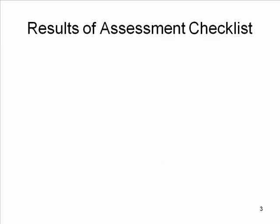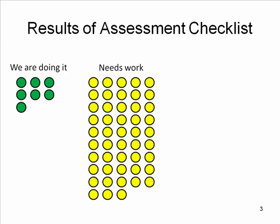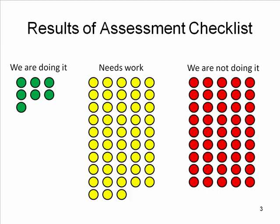So here are the results of our assessment checklist. When we take a look at the items that we are doing, there are only seven out of a hundred that we're doing well. There are 48 that we're doing but definitely need work. And there are 45 that we're not doing at all but we should be. Now, if you think about these as stoplights in our journey, with all those red and yellow lights, we're not going to get very far very fast.